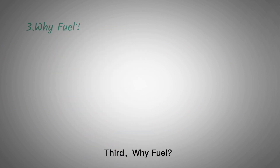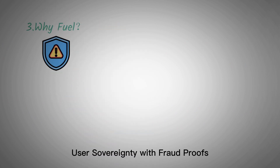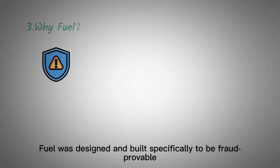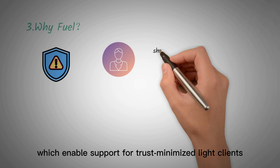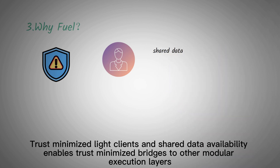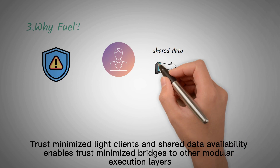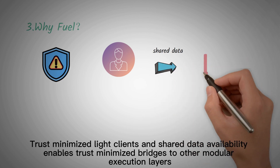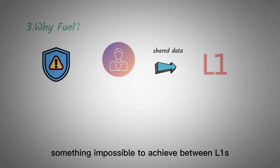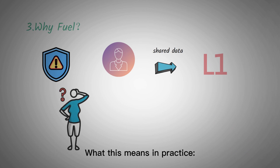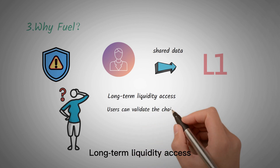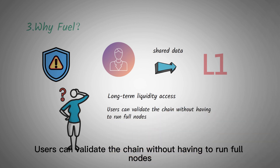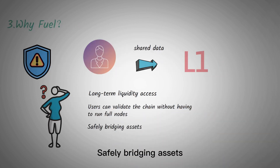Third, why Fuel? User sovereignty with fraud-proofs. Fuel was designed and built specifically to be fraud-provable, which enables support for trust-minimized light clients. Trust-minimized light clients and shared data availability enables trust-minimized bridges to other modular execution layers, something impossible to achieve between L1s. In practice, this means long-term liquidity access — users can validate the chain without having to run full nodes, safely bridging assets.